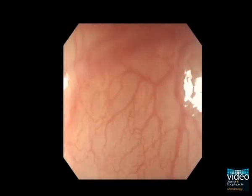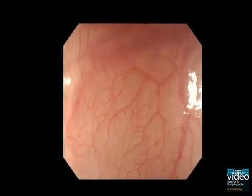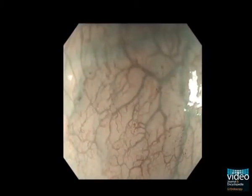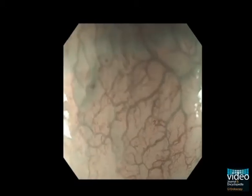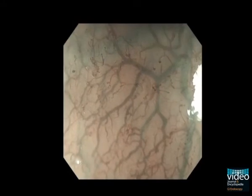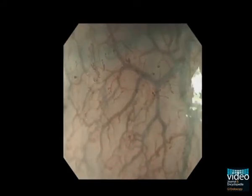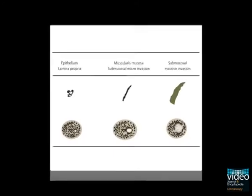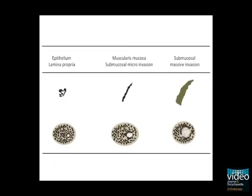Narrowband imaging provides a clear image of the mucosal surface in esophageal cancers. The mucosal microstructure changes dramatically with the development of cancer. Diagnosis and prediction of infiltration depth in esophageal neoplasias can thus be achieved by observing the architecture of the esophageal microvasculature. This video presents the diagnostic process for esophageal squamous neoplasia based on the new Japan Esophageal Society classification.